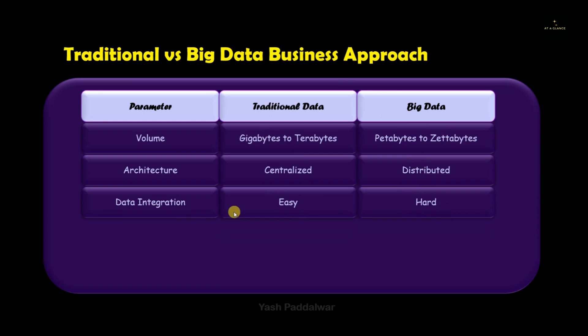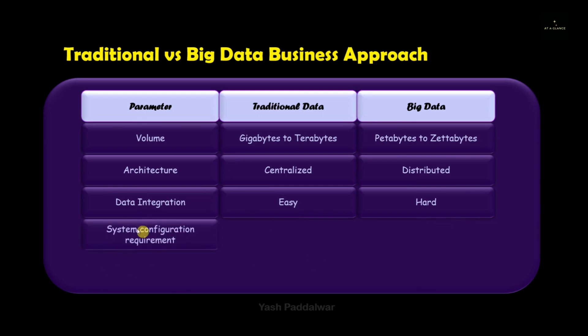The next parameter is data integration. In the traditional approach, integrating data was not a big task — it was easy because mostly the data was in structured format, so joining them was not a big deal. In the big data approach, it is really difficult to integrate data because the data can be in different types and different formats.